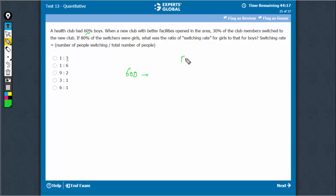So, if there are 600 members, there are boys and there are girls, 60% boys would mean 360, this is 240.